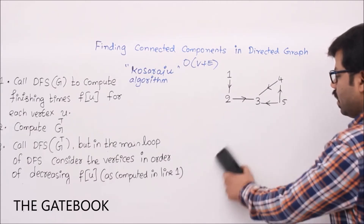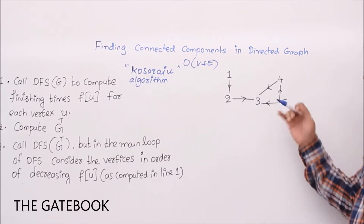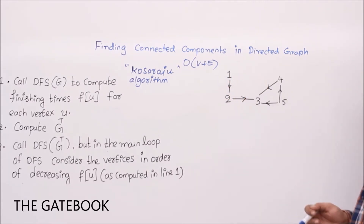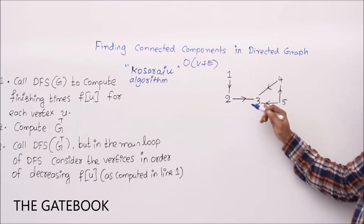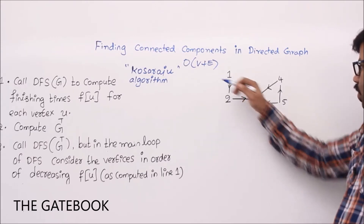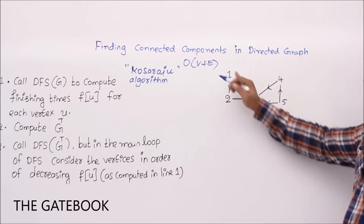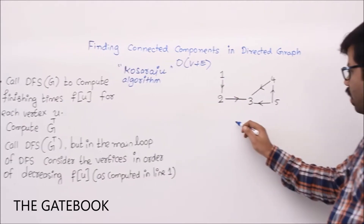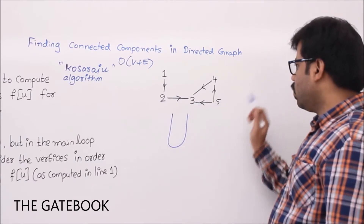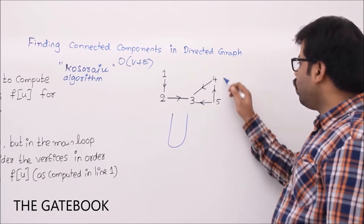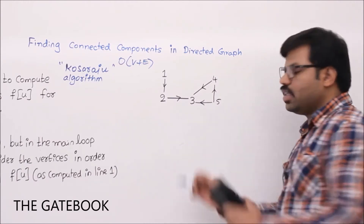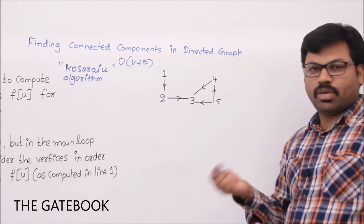Now, are there any two vertices that are reachable from each other? From 1 to 2 there is a path, but from 2 to 1 there is no path. Similarly, 1 to 3 we can reach but from 3 to 1 we cannot. From 3 to 4 — no. 3 to 5 — no. 5 to 4 — no. 4 to 5 — no. So here, every vertex is its own connected component; no two vertices are mutually reachable.